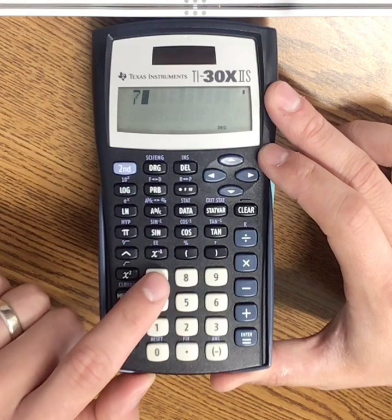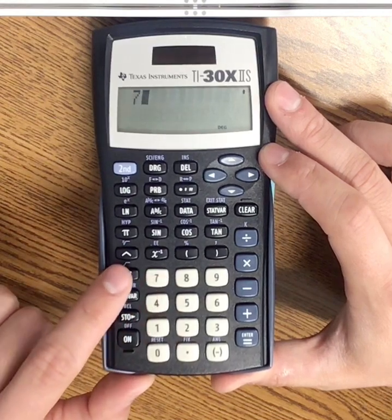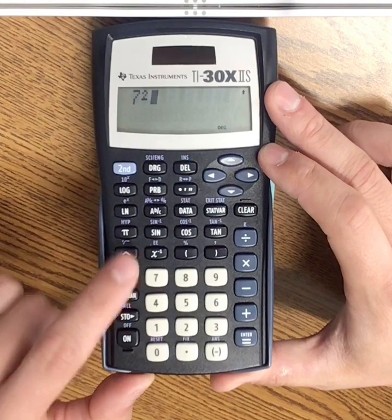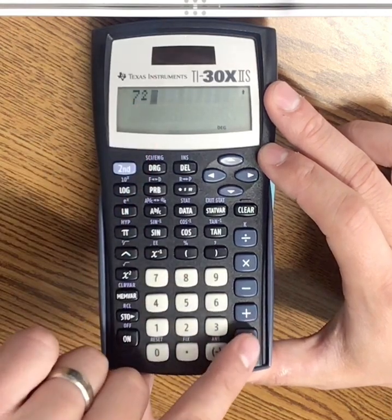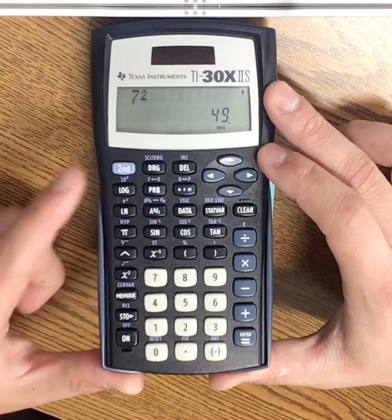So if I want to do 7 squared, I simply just click this button and it adds the exponent of a 2. If I click enter, I should get 49. Very good.